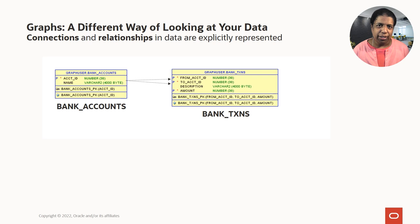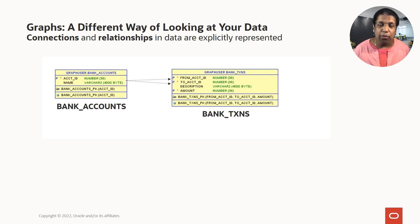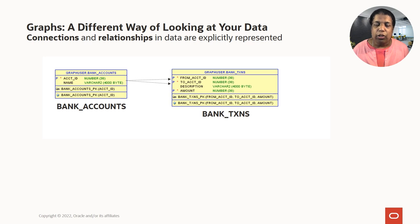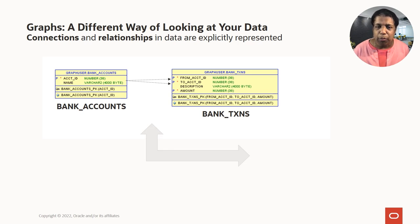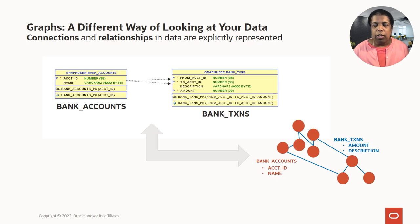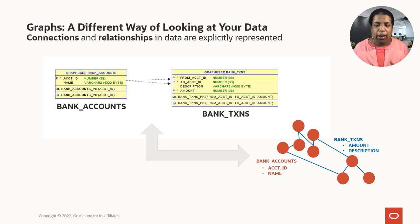Graphs are a different way of looking at your data. For example, you have a bank accounts table and a bank transactions table. Bank accounts contains account ID information, and bank transactions contains information on cash transfers between two accounts. To create a graph from these tables, you represent your bank accounts as vertices, and the bank transactions — the relationships between two accounts — as edges. So you're explicitly representing the relationship that an account transferred money to another account as an edge in the graph.